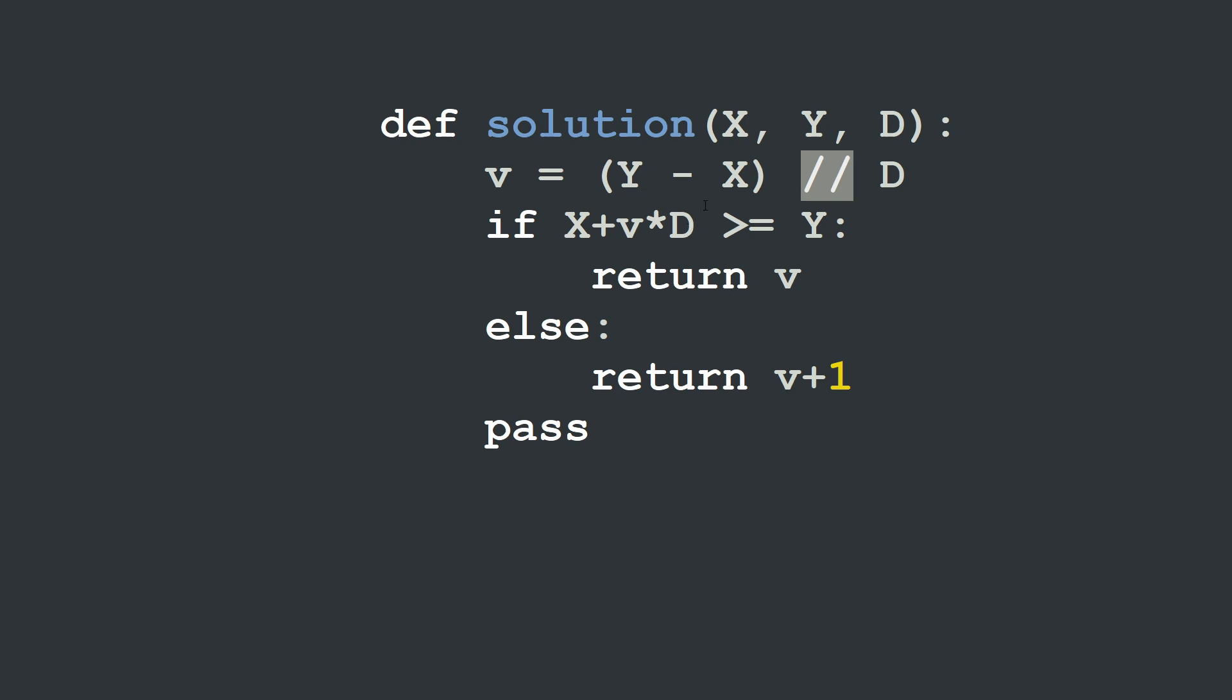Otherwise if we use the normal division, Python will transform v into a float and we will have fractions of jumps. Remember that v here represents the number of jumps, so it must stay an integer.